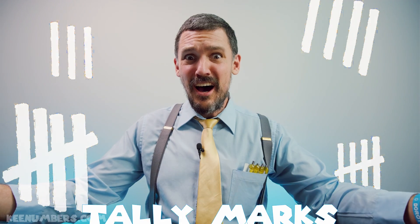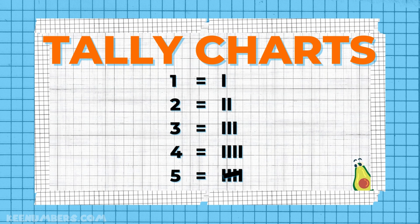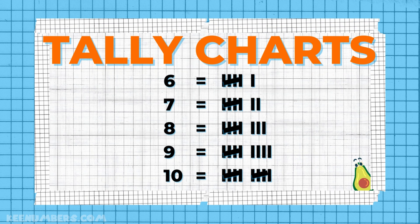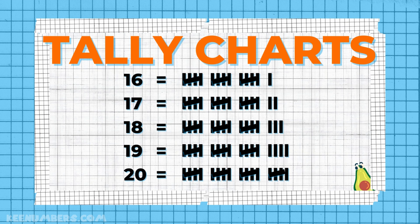Tally marks, or tally charts. These lines give us a way to write down the numbers 1, 2, 3, 4, and 5. The key is every time you get to a 5, or a multiple of 5 like 10, 15, 20, you're going to draw a diagonal line to indicate 5. So 1, 2, 3, 4 will be vertical lines, and then when you get to 5, 10, 15, 20, you do a diagonal line.